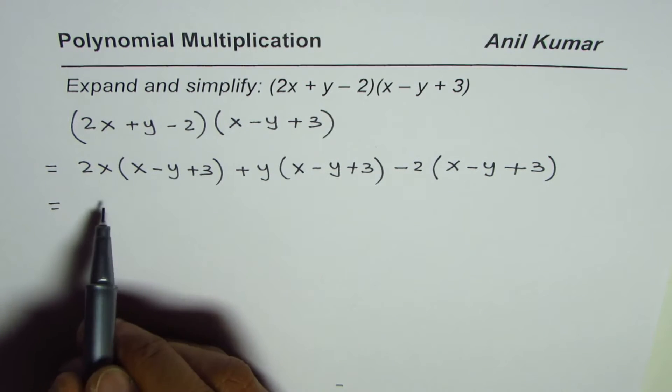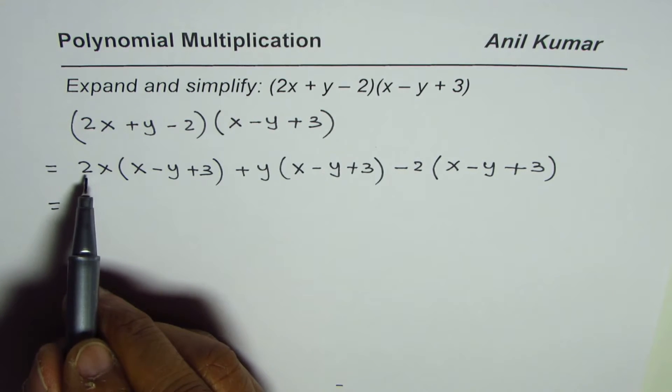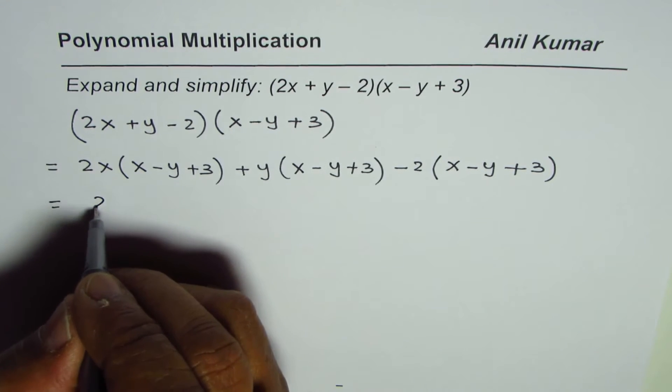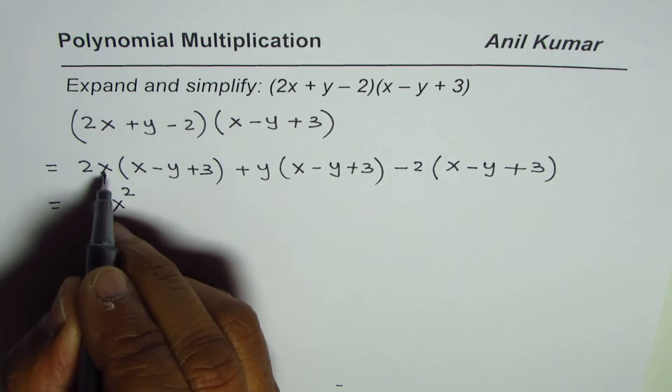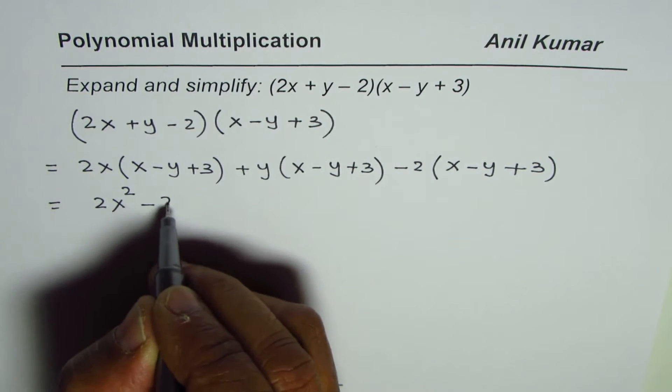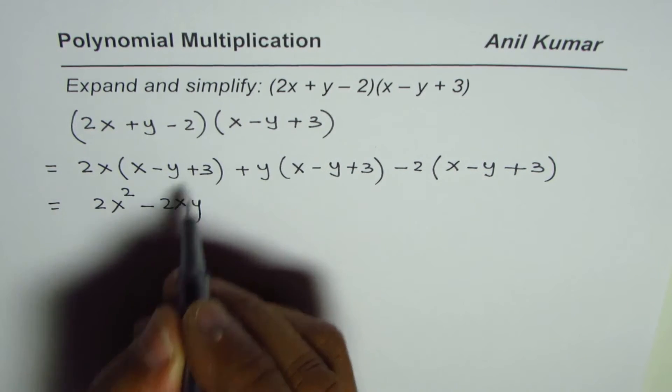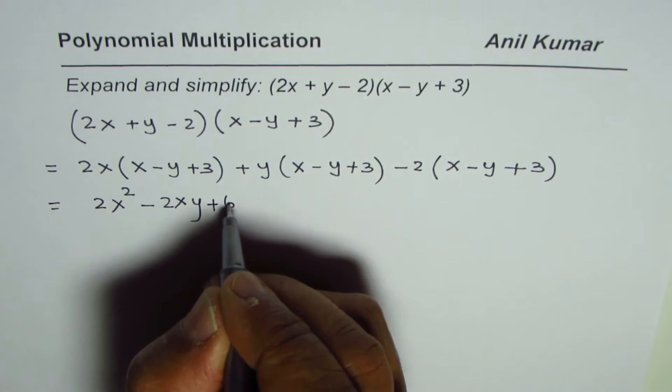Multiplying each term by the term outside: 2x times x gives us 2x², 2x times -y is -2xy, 2x times 3 is +6x.